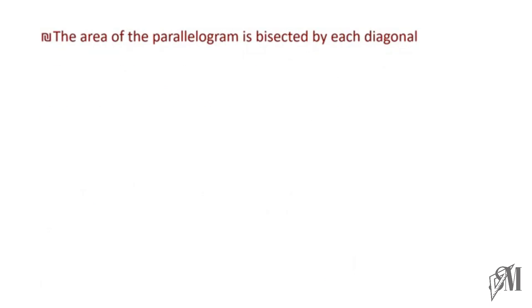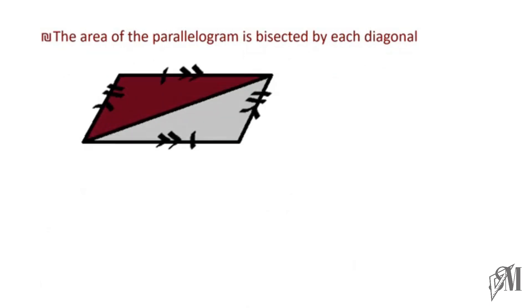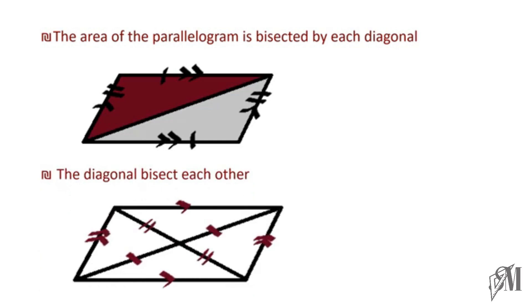The next property of a parallelogram is that the area of a parallelogram is bisected by its diagonal. The diagonal is the line joining the opposite vertices. If you draw the diagonal, the area of the parallelogram is divided into two equal halves. The same thing can be shown using the other diagonal. The final property is that the diagonals bisect each other — they intersect at a point and bisect one another.